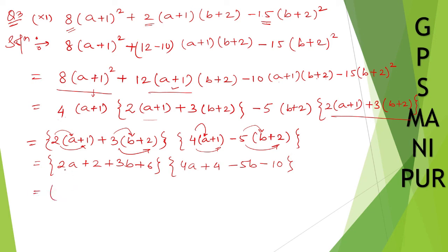Now, let me write down the final answer. 2a + 3b + 2, 2a + 3b, and 6, plus 8. In here, 4a - 5b, minus 6. 10 minus 10 plus 4, minus 10 plus 4, it is minus 6. I hope the answer is correct. Thank you so much. We will meet in the next video.